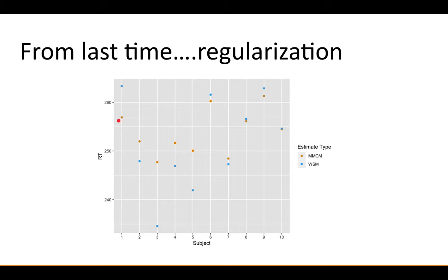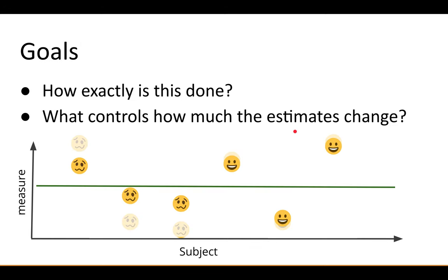This is an example I showed from last time. The blue dots were the within-subject means, so that would correspond to ordinary least squares estimates. The orange estimates are the mixed model conditional mode estimates. If you didn't watch the last video, you should go back and watch that first. You can see the regularization for this subject is stronger than this subject because this subject had more data. So even though they both start at the same place, this one moves less. In this case, the overall mean was somewhere around 252.